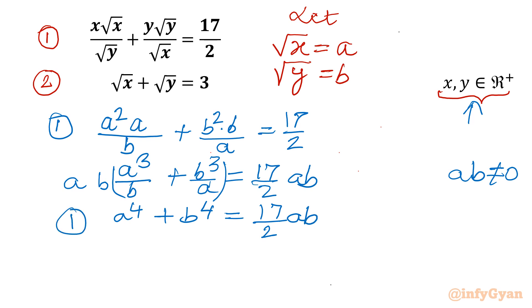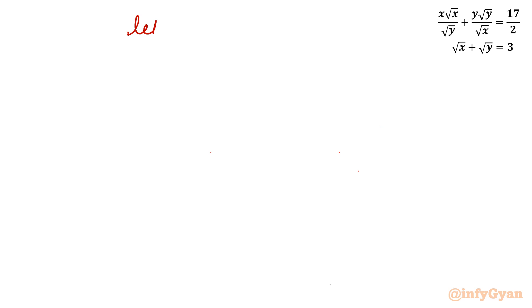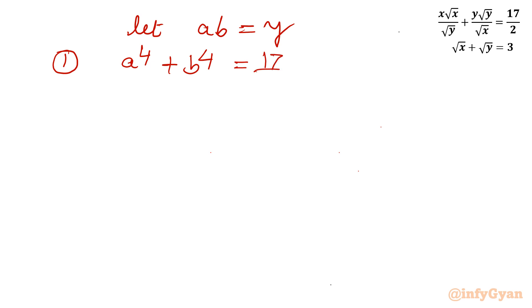This is our equation number 1. Now equation number 2 is straightforward: √x + √y becomes a + b = 3. This is our new system of equations, which is comparatively easier than the original. I'll apply one more substitution: let ab = y. So equation 1 is a⁴ + b⁴ = (17/2)y, and equation 2 is a + b = 3.